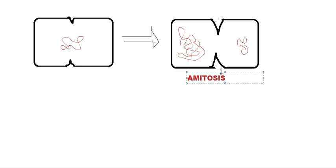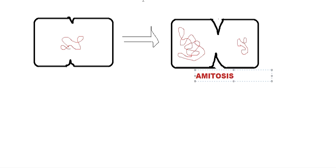This process is amitosis. It is very much similar to mitosis but different from it — the main difference is that there is no equal division of the genetic material. So as you may have guessed, the cell splits into two halves.